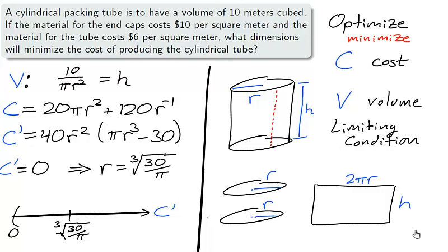We need to determine if the cube root of 30 over π is an absolute minimum for the cost function. Note that there cannot be negative r values, so the number line starts at 0. Taking the test points 1 and 4 for C prime, we'll find that the cost function is decreasing from 0 to the cube root of 30 over π, and increasing after that. Using the first derivative test, this tells us that our value is a local minimum, but as the function was decreasing before and increasing after the cube root of 30 over π, it is an absolute minimum.